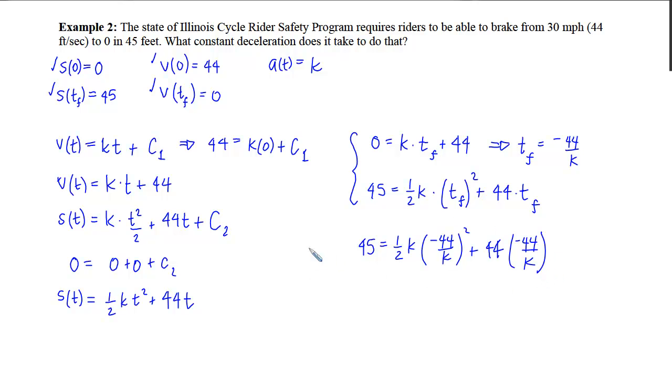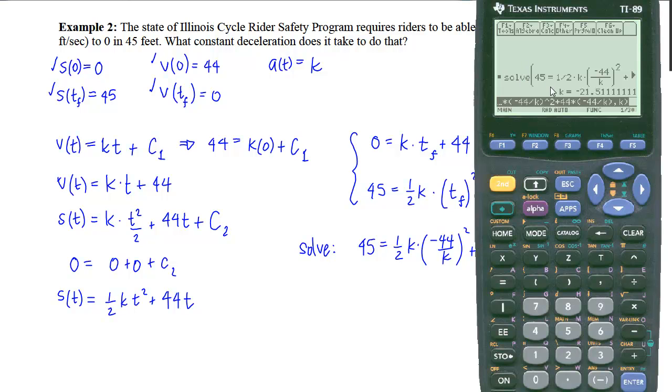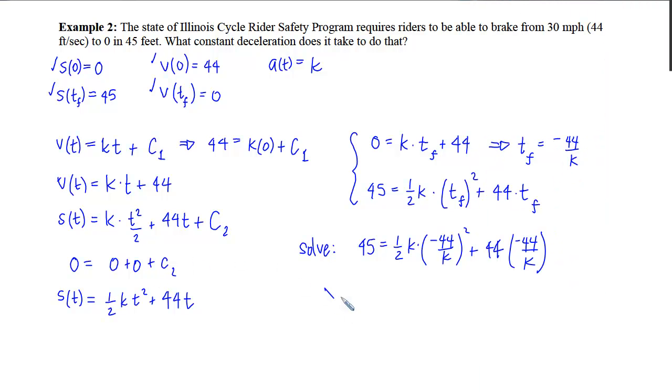Now this particular problem I can now solve on my calculator since there's just one unknown as long as I put it in correctly and then I'll be able to find the answer. So if we look at the calculator, we can see here that I have solved for when 45 equals 1 half times k times that negative 44 over k squared plus the 44 times the negative 44 divided by k. And I'm solving that with respect to k. If I hit diamond enter, I end up with negative 21.511. So k will equal negative 21.511, and the units for k are feet per second squared because it is an acceleration. And we're done.